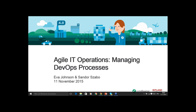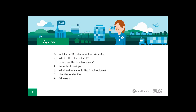Welcome everyone to today's webinar about agile IT operations managing data processes. My name is Eva Johnson and I'm going to be your host today. First, I'd like to show you our agenda. We'll begin with a quick overview about the isolation of development from operations — what it means and the reason for it. Then some information about what DevOps is, how DevOps teams should work, and the benefits of DevOps. Before the live demonstration, I'll also give you a better overview of what DevOps tools should have. This theoretical session will be followed by a live demonstration and a Q&A session, hosted by my colleague Sander Szabo.